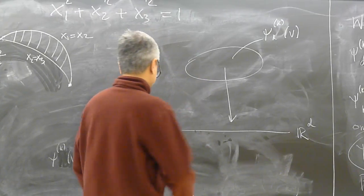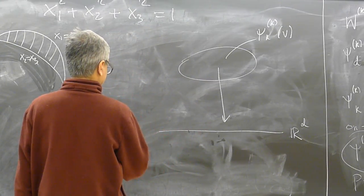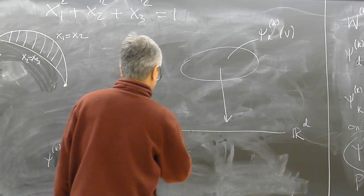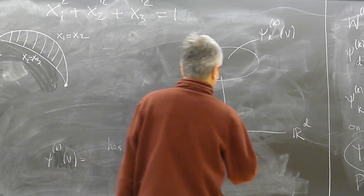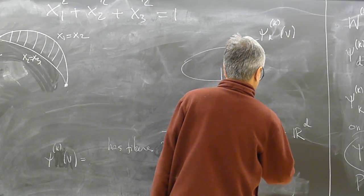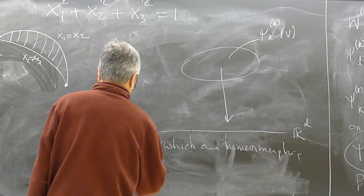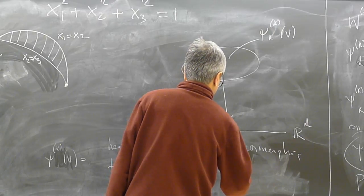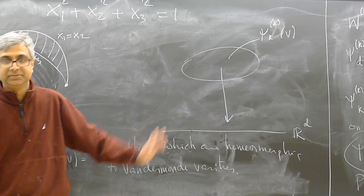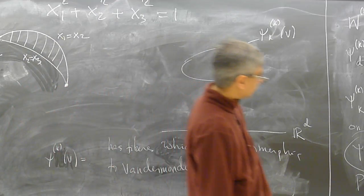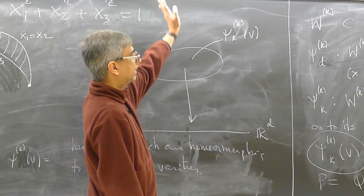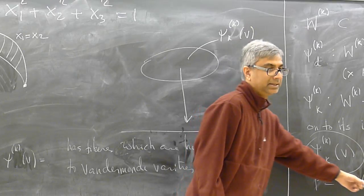So this projection has fibers of the form which are homeomorphic to van der Mond ideals, because I'm setting the first d of the Newton powers to some values, and the whole fiber has to be my set because my polynomial is a cylinder over the first d.